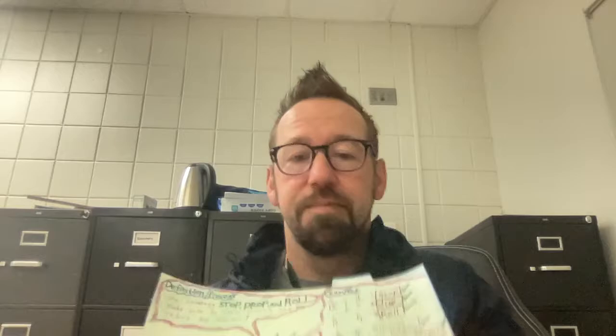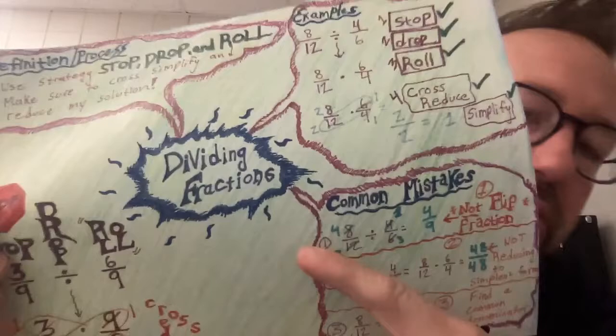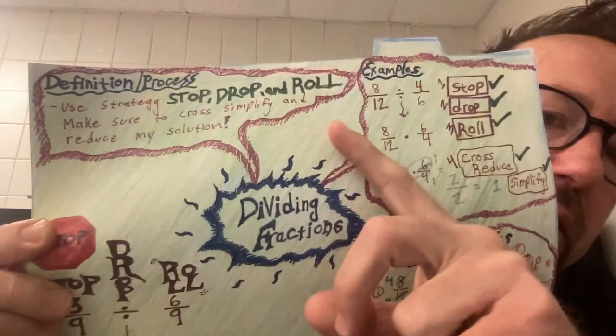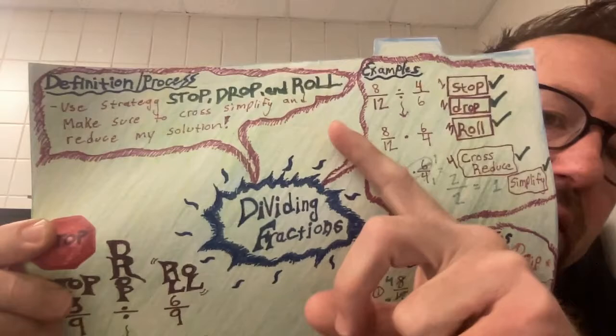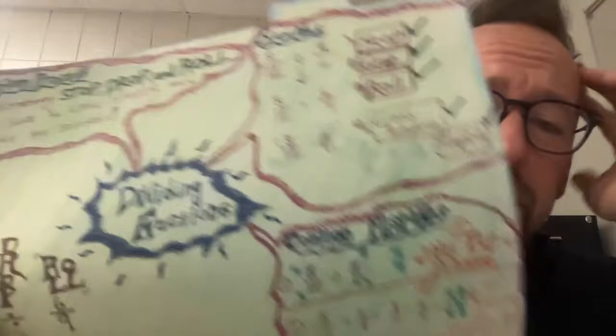Then you're going to provide — here's an example of one I made. As you can see, I colored it and I want to make this look good. I have the definition or what's called the process. I chose dividing fractions for mine. Then if you look up here, the process — it could be a definition or process. I put: use the strategy stop, drop, and roll — make sure to cross simplify and reduce my solution. That was a strategy. We use keep, change, flip. This was just an old strategy I used.